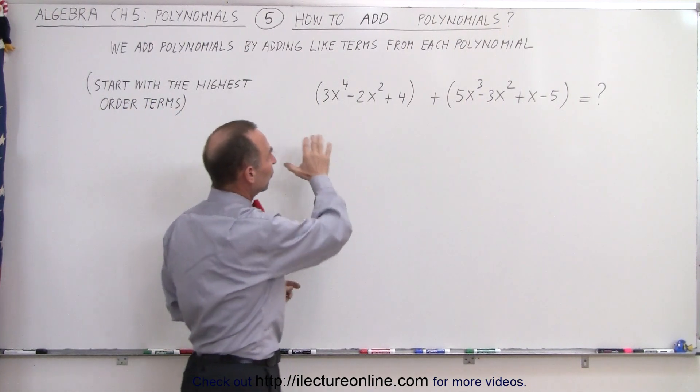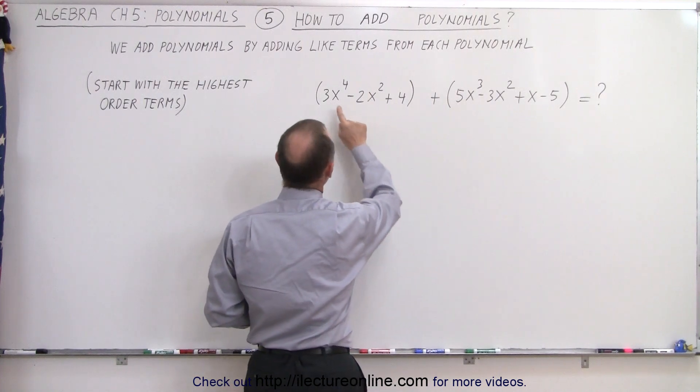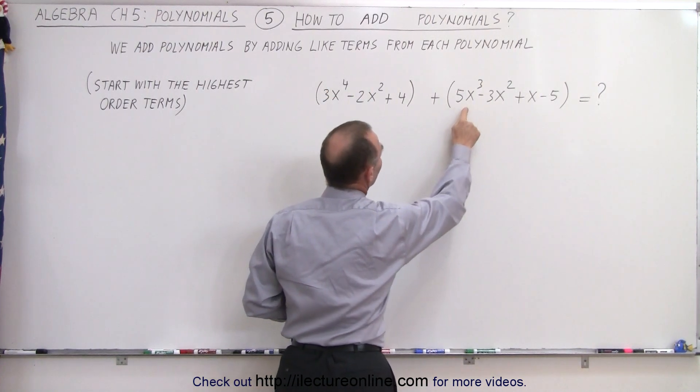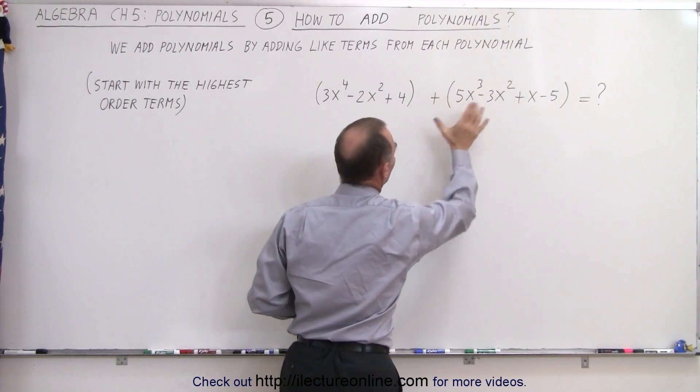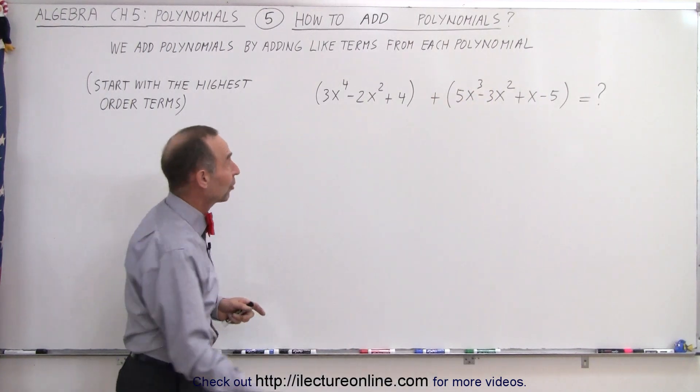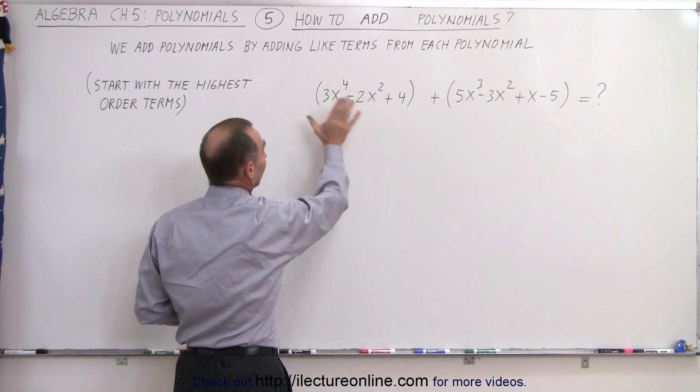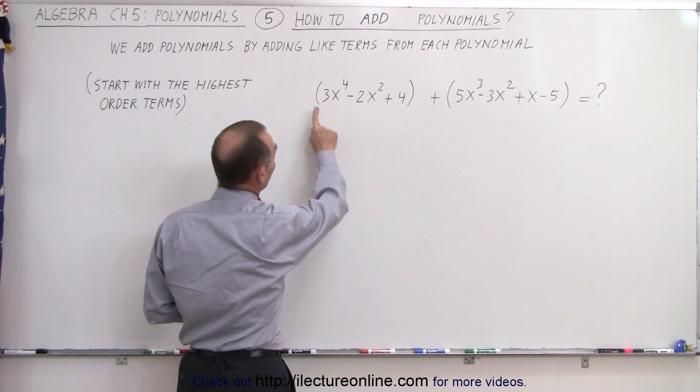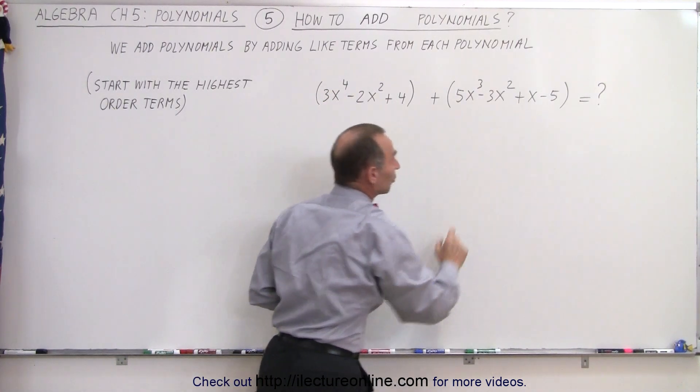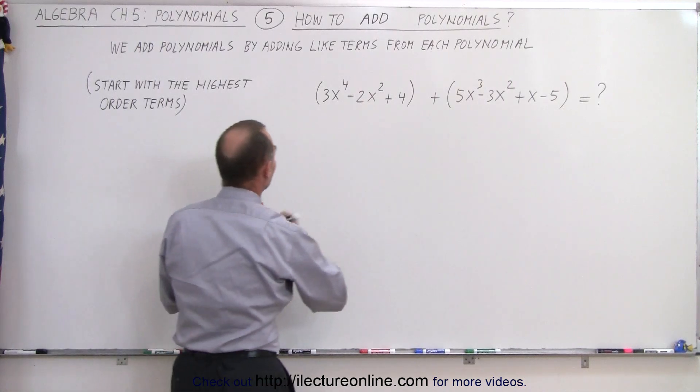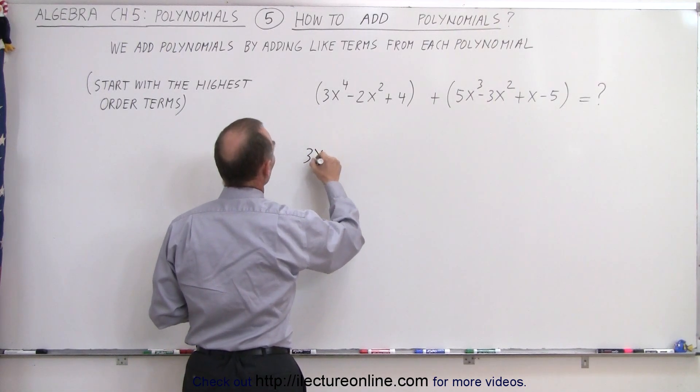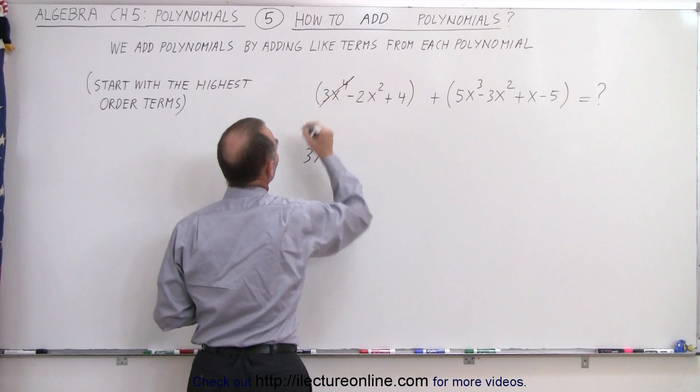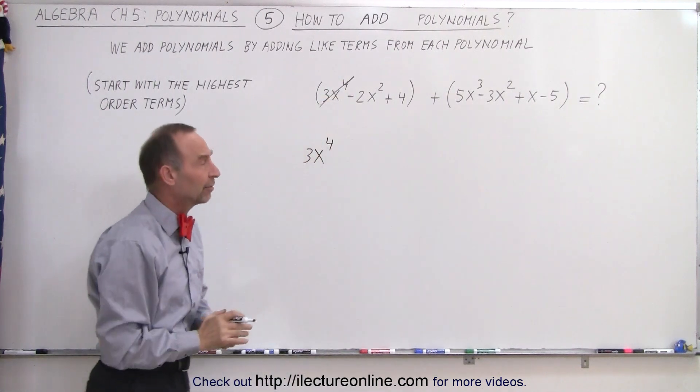So we'll look at both of our polynomials, and we find that we have an x to the fourth here, and we have an x to the third here as the highest power in each of the two polynomials. So we'll start with 3x to the fourth, that's the highest power. Notice there's only one term in both polynomials that has order four, so we write that first. 3x to the fourth power, and then we may want to put a line through it, saying we've already taken care of that one.